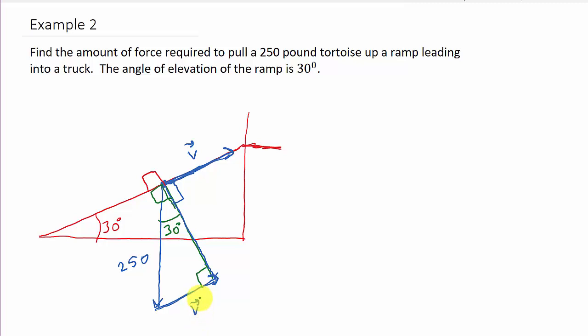This is easy to find. We're just looking for the magnitude of this vector here. Well, we know this is 250. We know this angle. This is a right angle. So 250 is the hypotenuse. And then this side here is opposite 30 degrees.